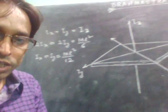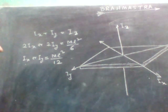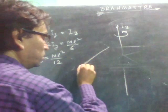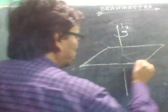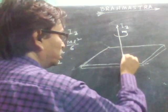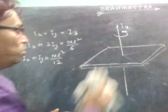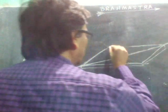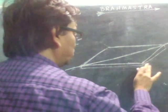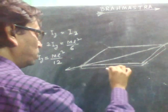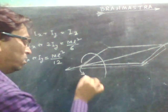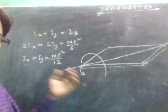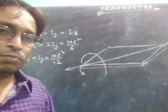So if you want to rotate a square plate about one of its diagonals, its moment of inertia will be M L squared by 12. This is the use of the perpendicular axis theorem.